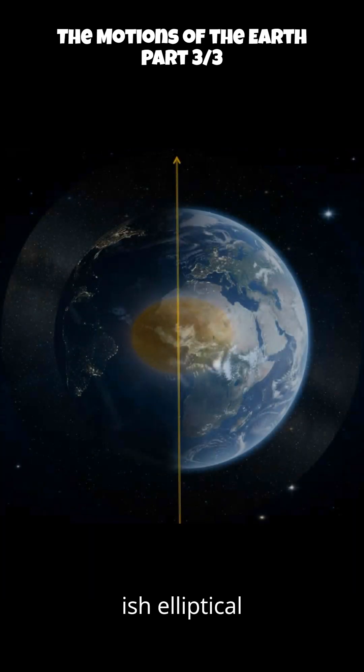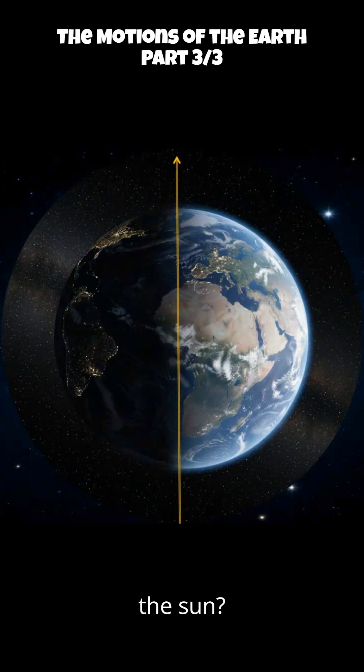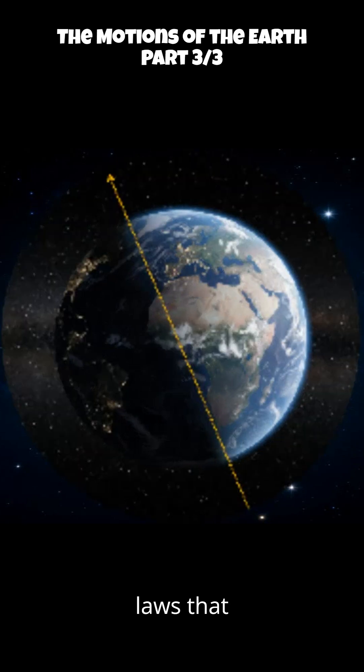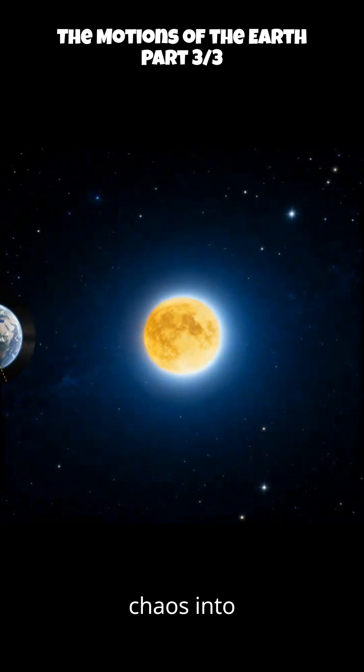But the real beat? That perfect-ish elliptical orbit around the sun. Buckle up. Kepler cracked the code with just three laws that turned cosmic chaos into pure dance floor precision. Let's drop the beat.